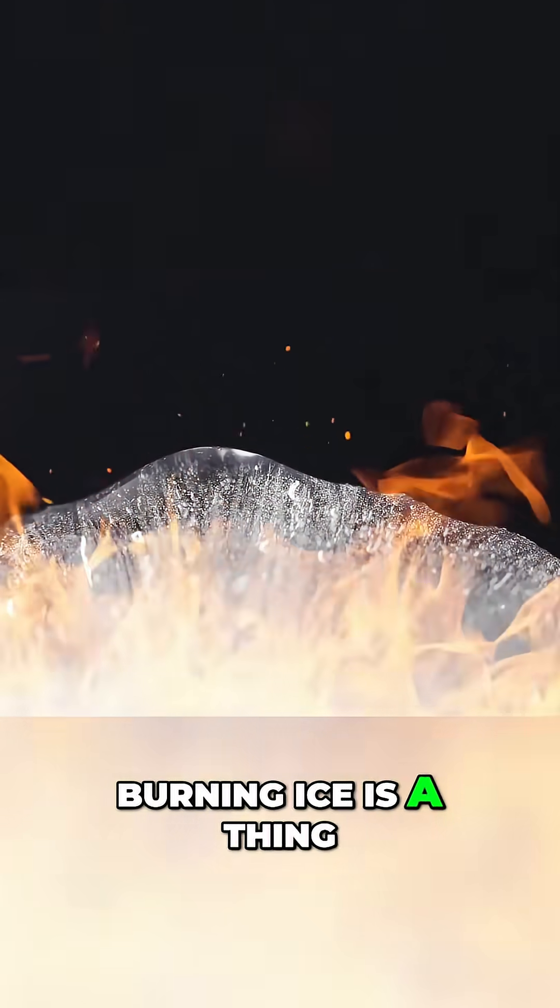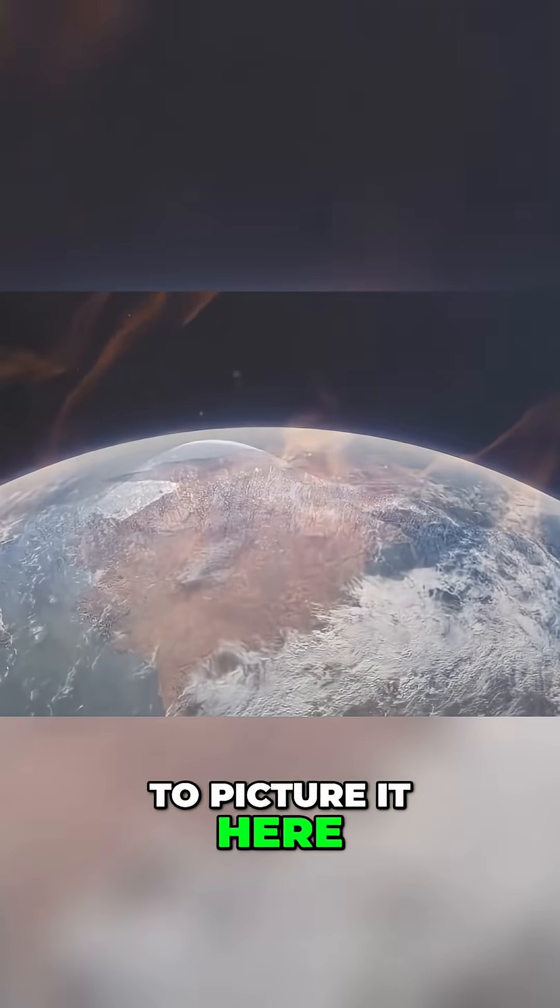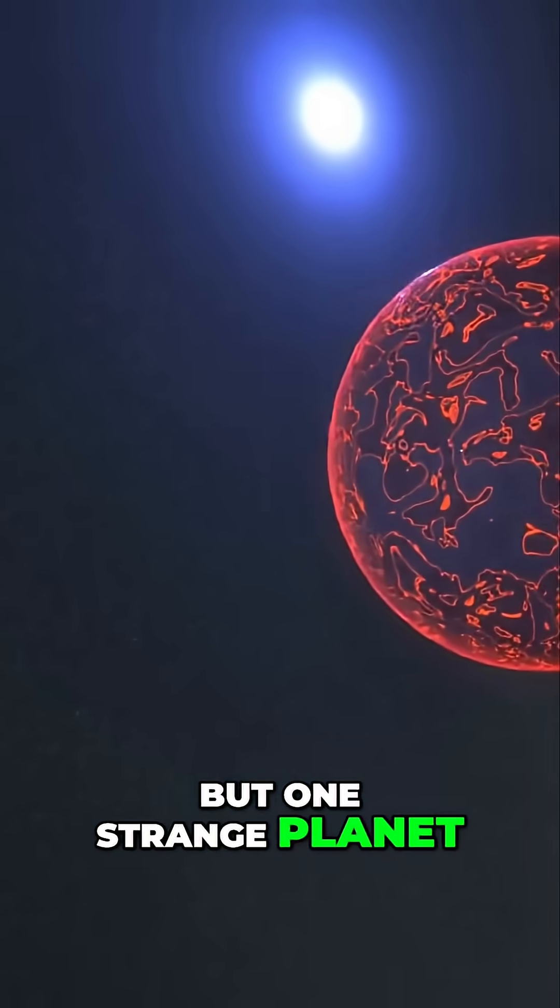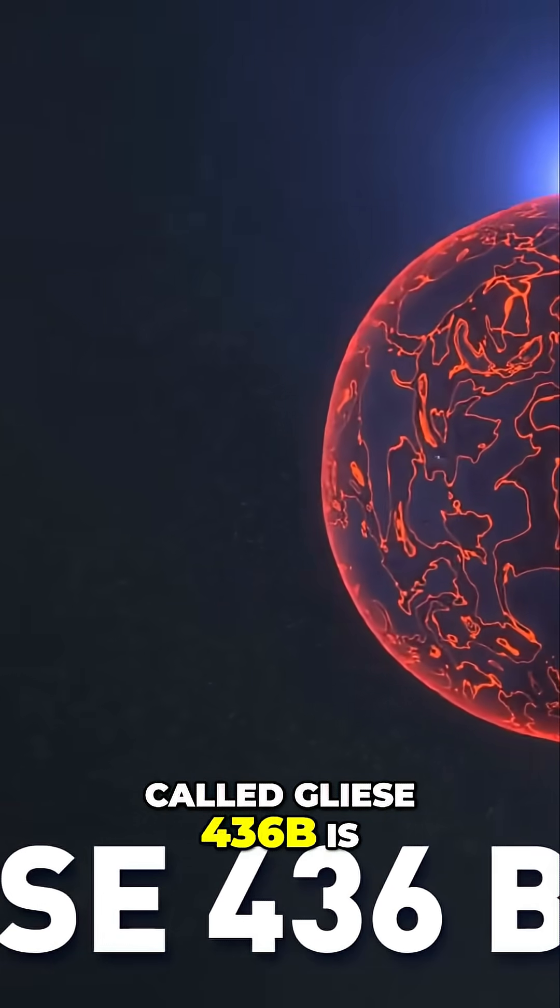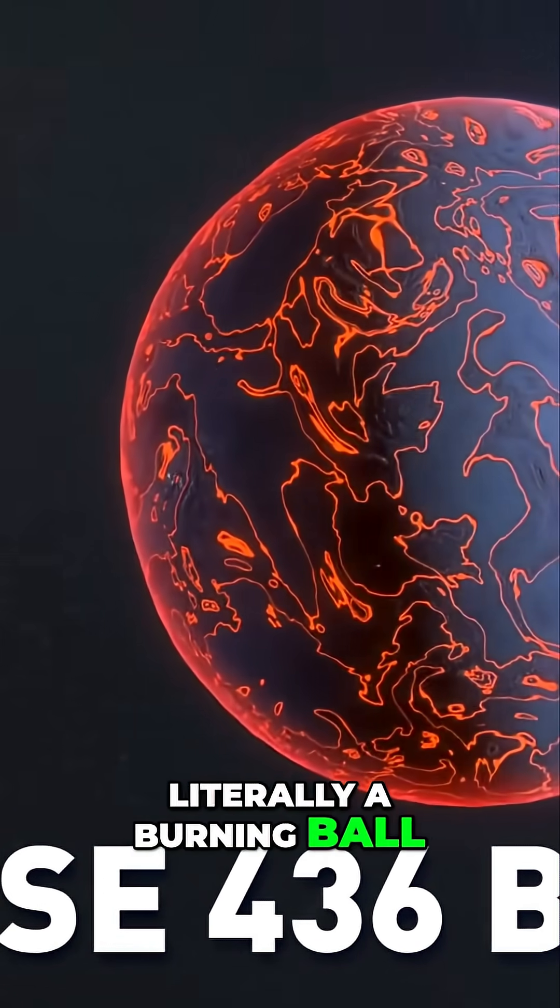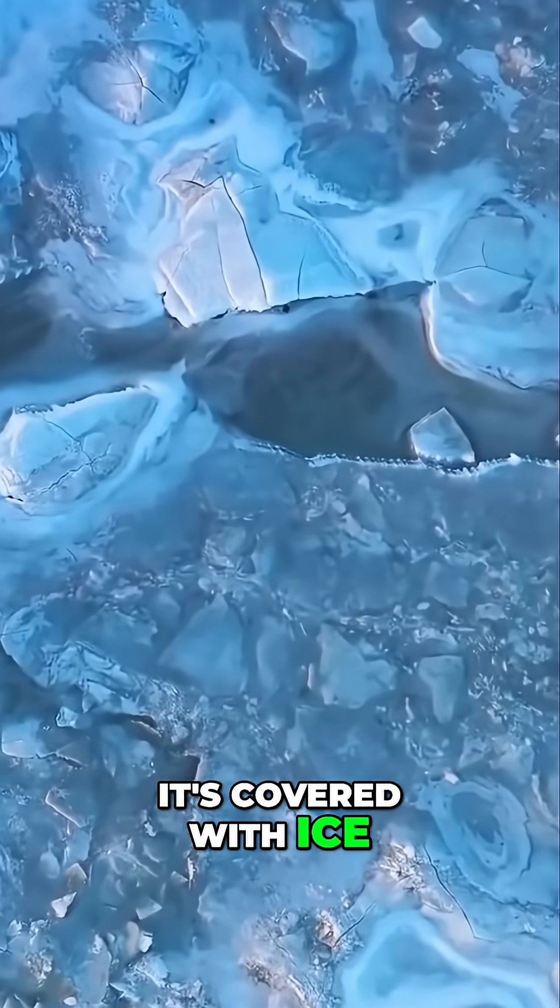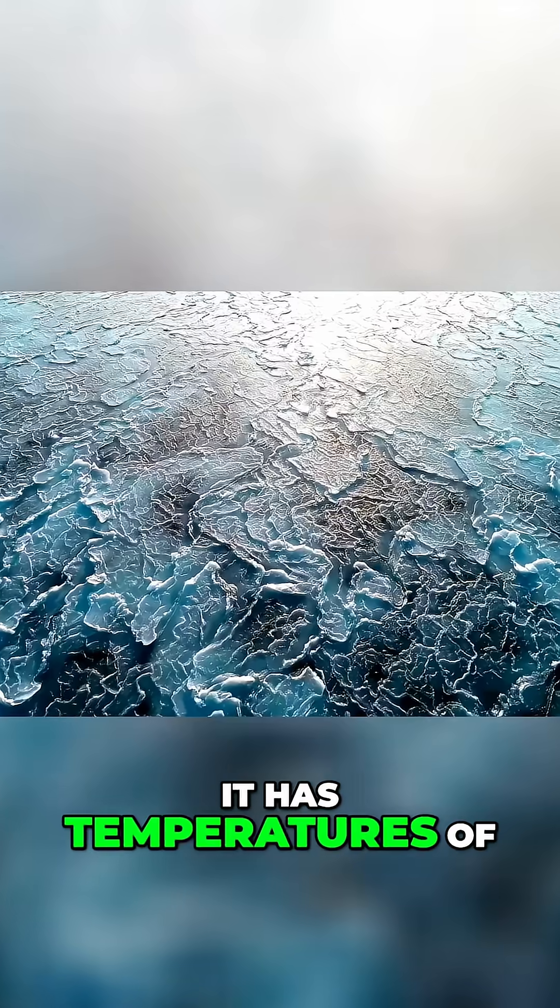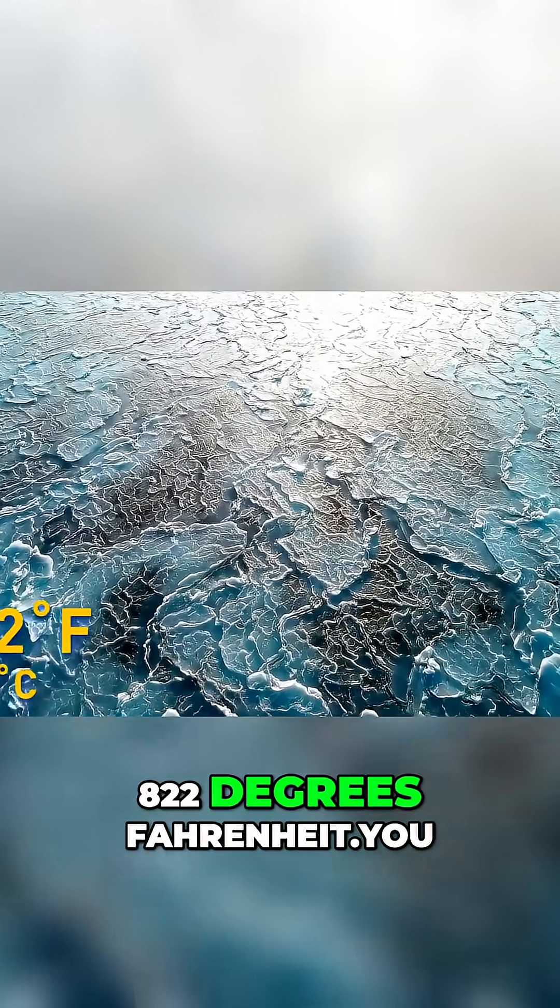A burning ice is a thing. It may be hard to picture it here on Earth, but one strange planet called Gliese 436 b is literally a burning ball of ice. It's covered with ice, but at the same time, it has temperatures of 822 degrees Fahrenheit.